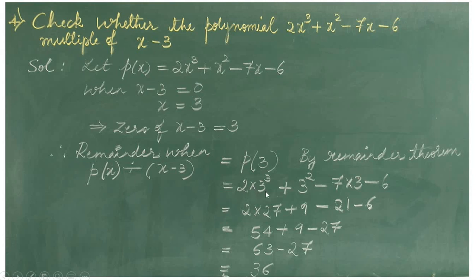We get 2 into 3 cube plus 3 square minus 7 into 3 minus 6. Since 3 cube is 27, p of 3 equals 2 into 27 plus 9 minus 21 minus 6, which equals 54 plus 9 minus 21 minus 6. Solving: 54 plus 9 is 63, and minus 21 minus 6 is minus 27. So it becomes 63 minus 27, which equals 36.